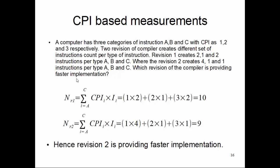Revision 2 creates 4, 1, and 1 instructions per type A, B, and C. So for the same program, revision 1 creates two A-type instructions, one B-type instruction, and two C-type instructions, where revision 2 creates four A-type, one B-type, and one C-type instruction. Which revision of compiler is providing faster implementation?